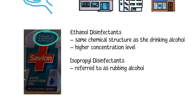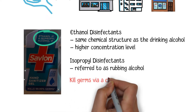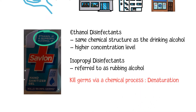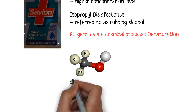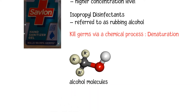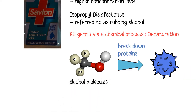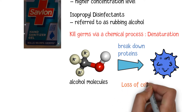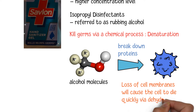From a chemical point of view, alcohol is able to kill germs via a simple chemical process known as denaturation. This means that at a certain concentration level, alcohol molecules can break down the proteins used in the structure of germs, like membranes. The loss of cell membranes and other structures will cause the cell to die quickly via dehydration.